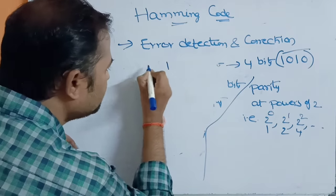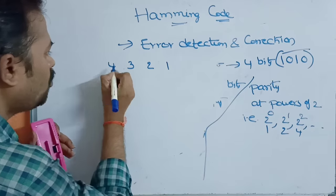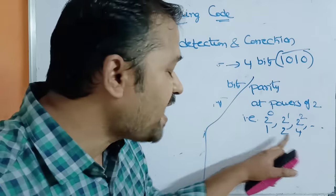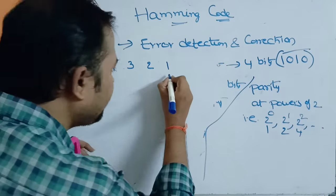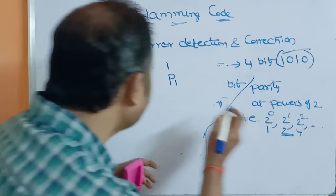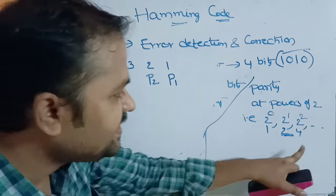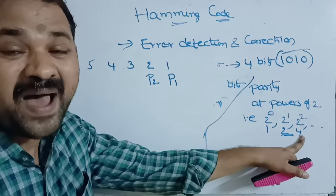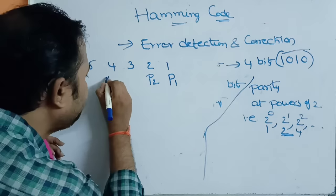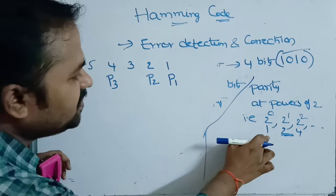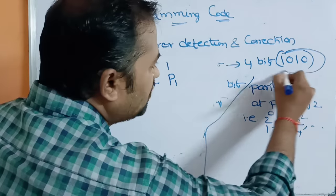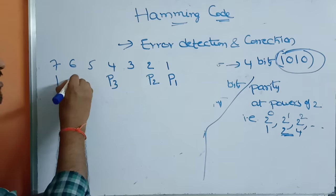Let us write out the code word. The positions are numbered 1 through 7. Parity bit P1 is at position 1, P2 at position 2, and P3 at position 4. The message bits 1, 0, 1, 0 are placed at positions 3, 5, 6, and 7 respectively.